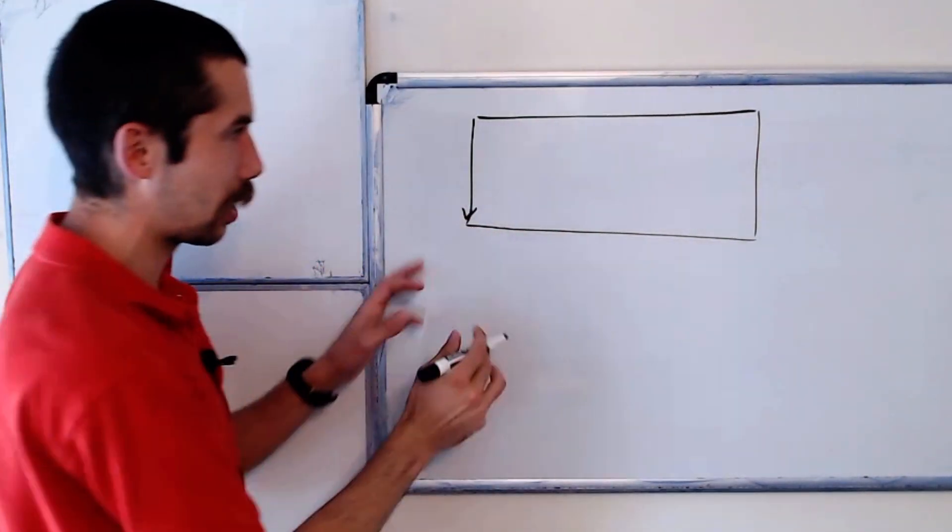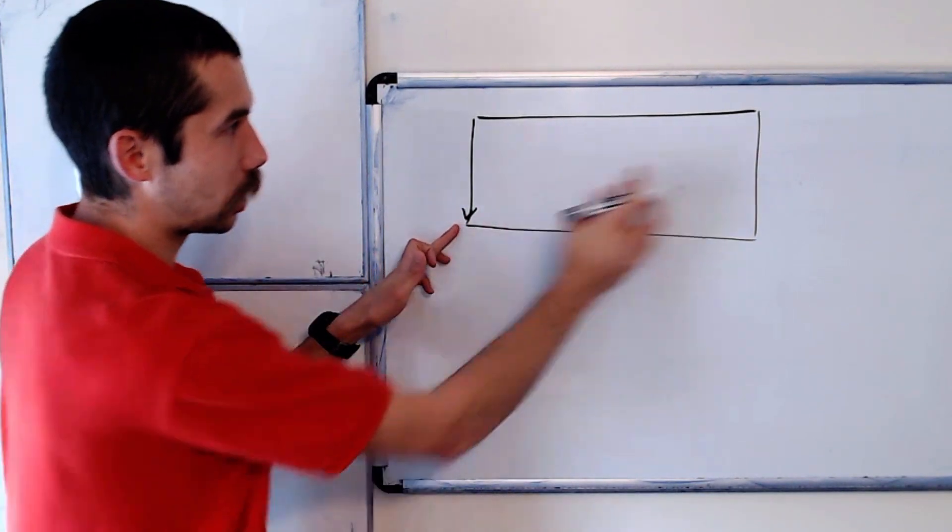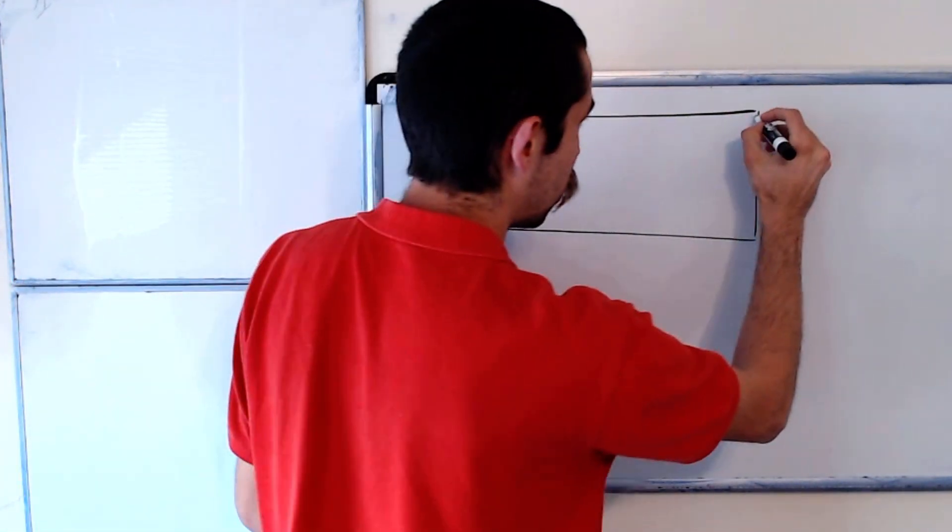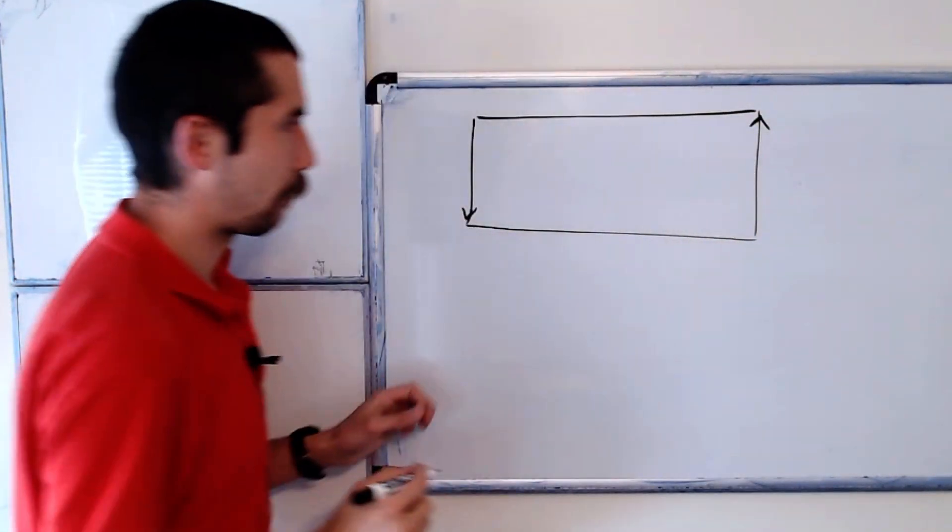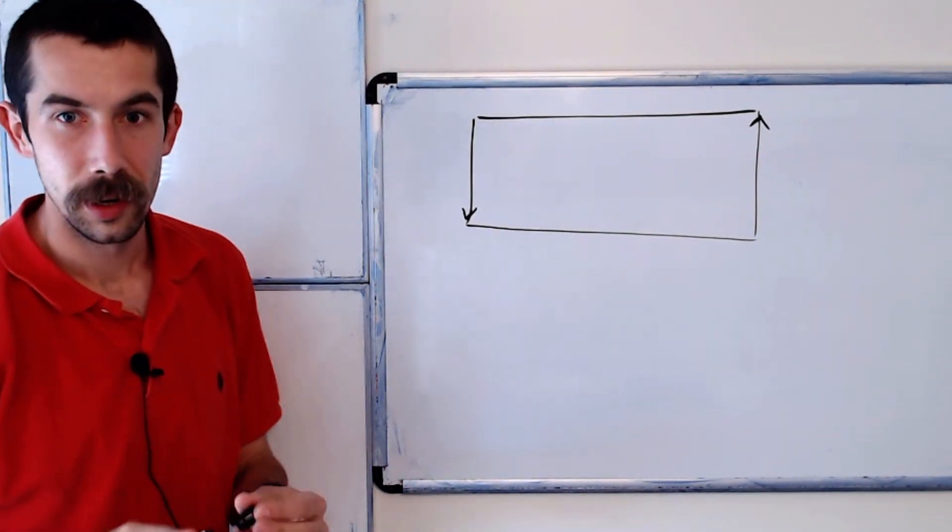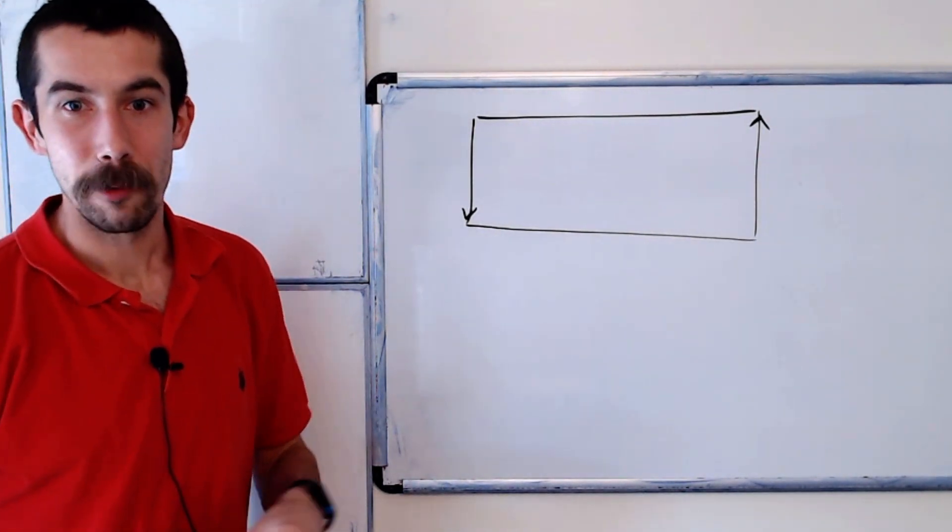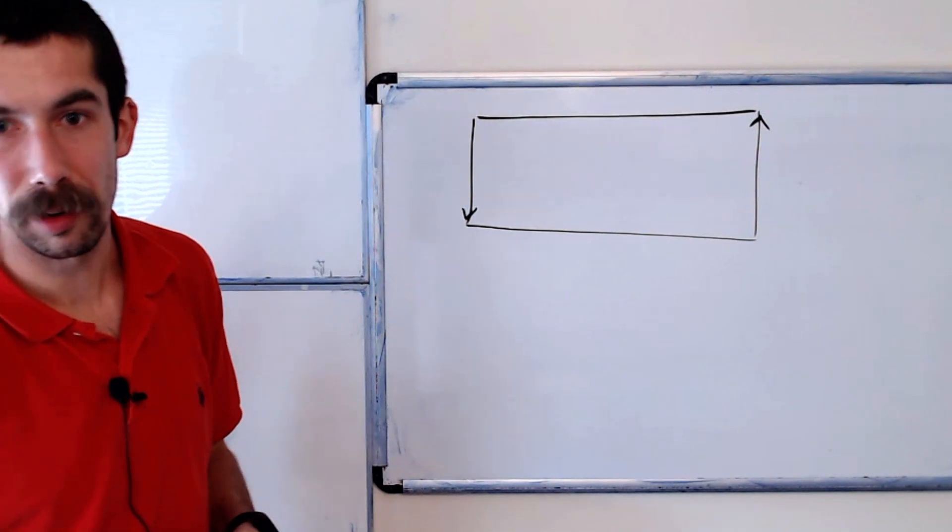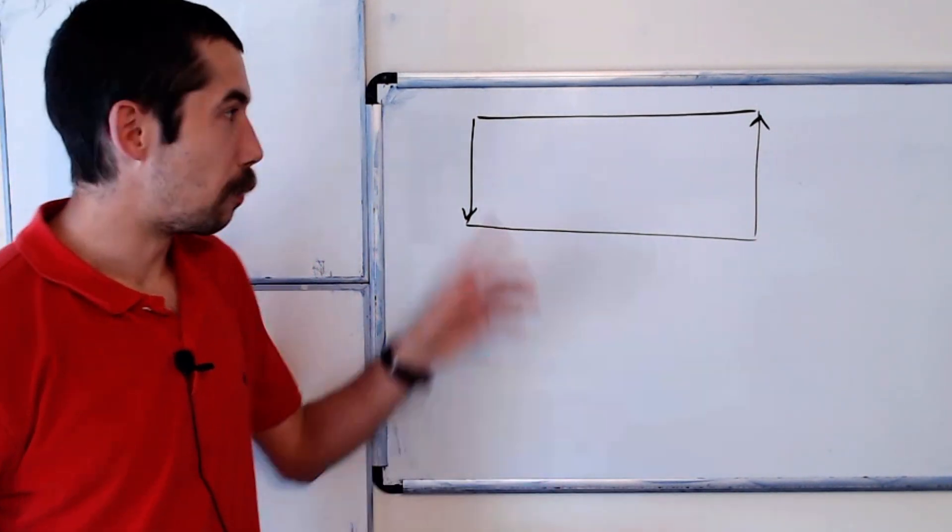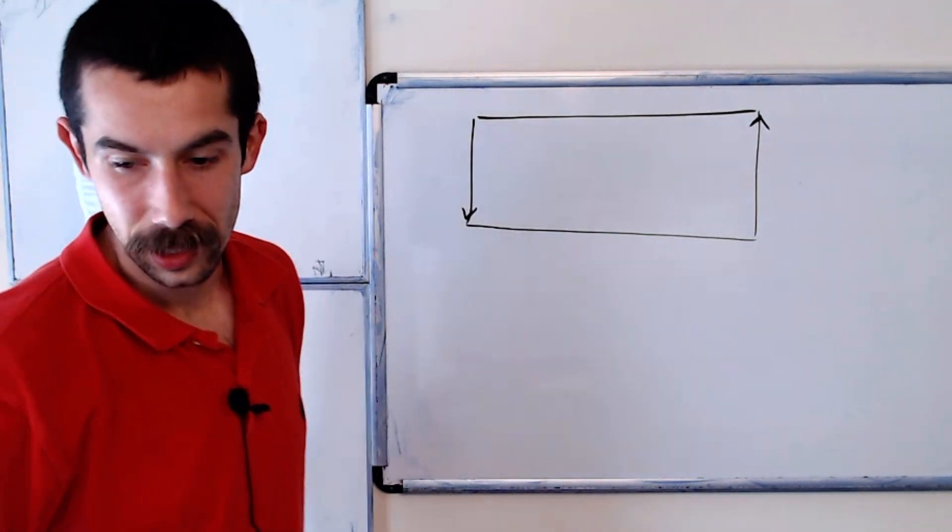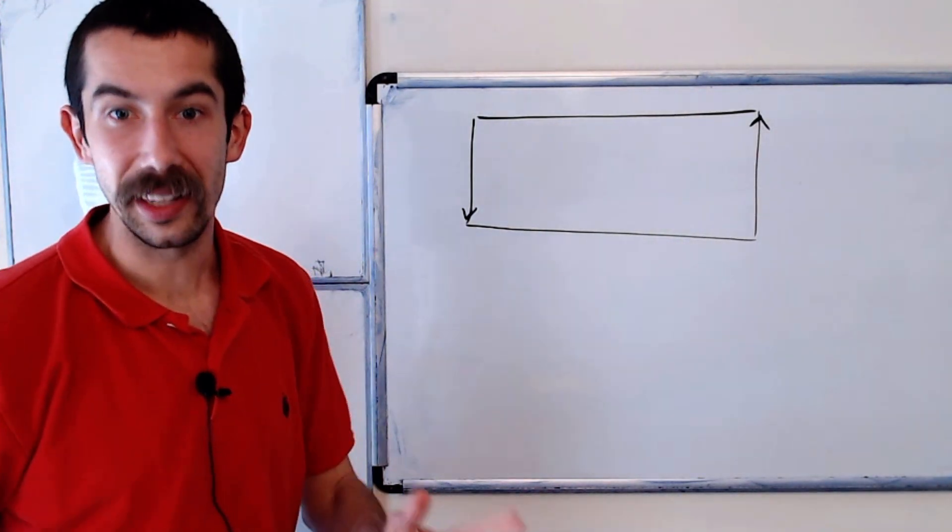So a Möbius band, you take a rectangle and you take one edge, identify it with the other edge with a half twist. And I'm going to show you with a counterexample that the four-color theorem does not hold for maps on the Möbius band. In fact, we're going to need at least six colors.